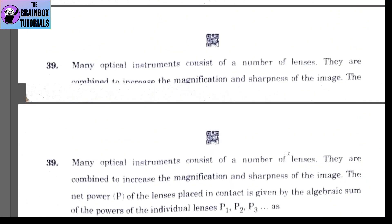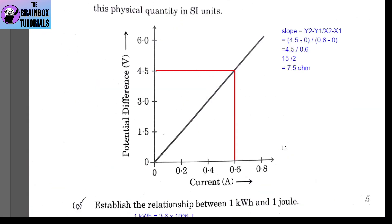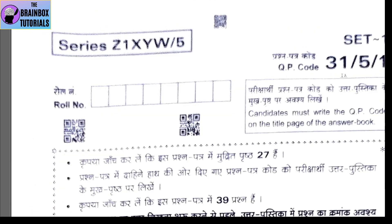So here we have solved the full paper of Science — Set 1 of 31/5/1. The other sets will have many similar and overlapping questions with different question numbers. I hope this solution helps you. I will come up with solutions for the Maths paper — basic and standard — so if you haven't subscribed, please subscribe and prepare well. All the best! Bye-bye! Jai Hind!